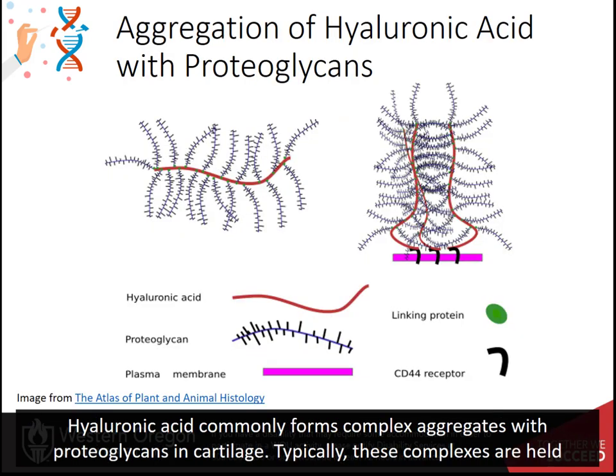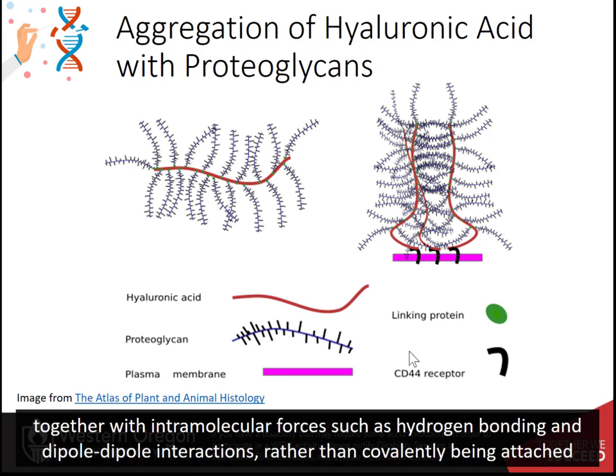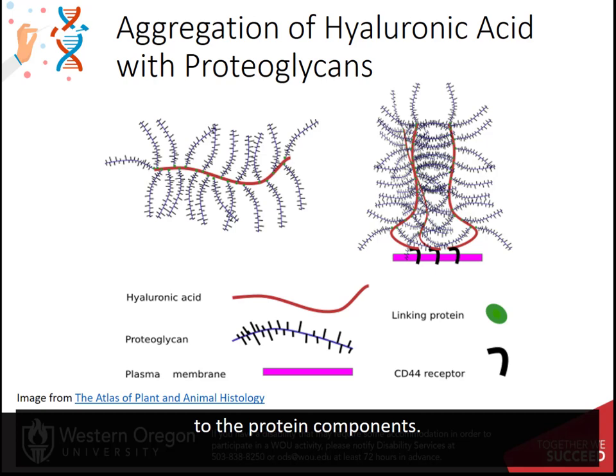Hyaluronic acid commonly forms complex aggregates with proteoglycans in cartilage. Typically, these complexes are held together with intramolecular forces such as hydrogen bonding and dipole-dipole interactions, rather than covalently being attached to the protein components.